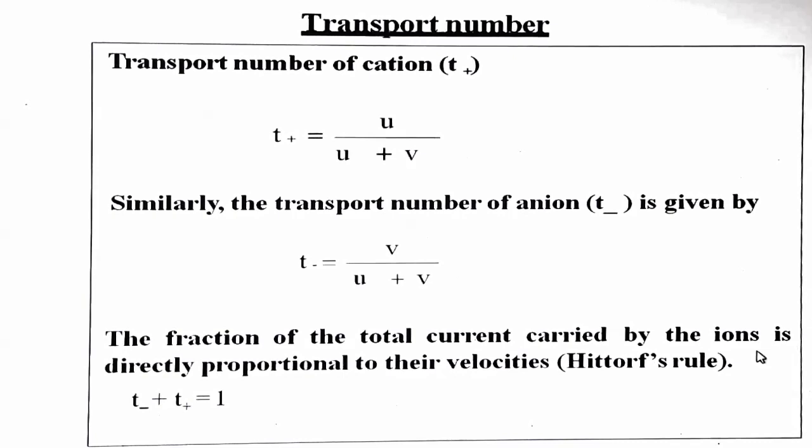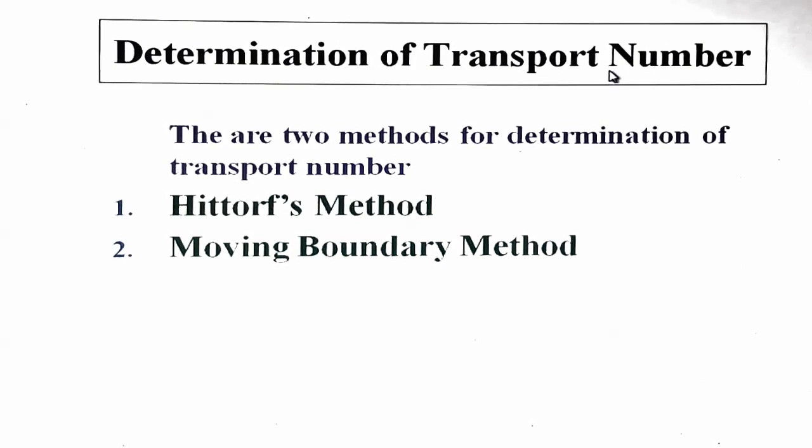The fraction of total current carried by ions is directly proportional to their velocities — this is Hittorf's rule. T-plus plus T-minus equals 1. There are two methods for the determination of transport number: first is the Hittorf method and second is the moving boundary method.